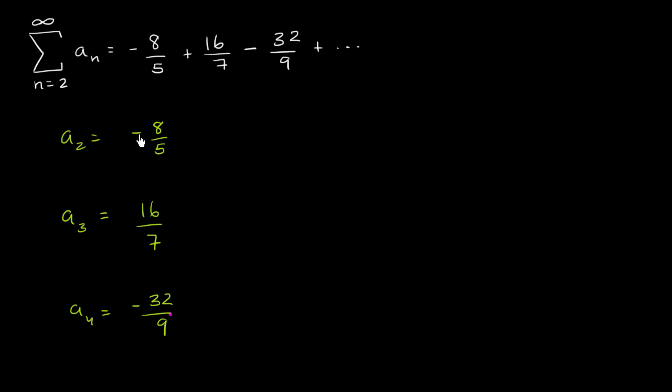And I'm just giving the sign to the number in the numerator. Negative 8 fifths is the same thing as negative 8 over 5. Let me make that a little bit clearer. So this is negative 8 over 5. Obviously, this is positive, so I don't have to really worry about it too much. And then here, I'm just saying negative 32 over 9 is the same thing as negative 32 over 9.